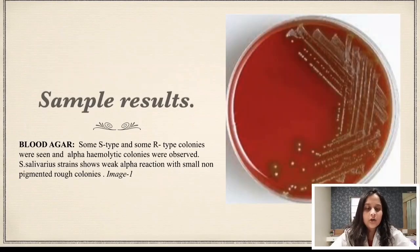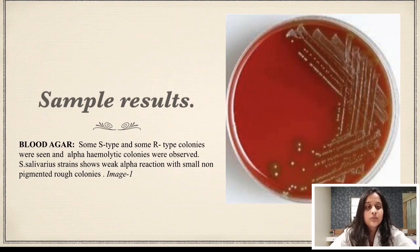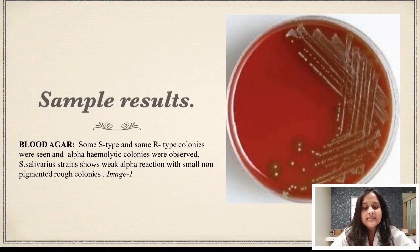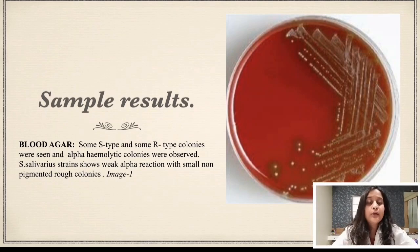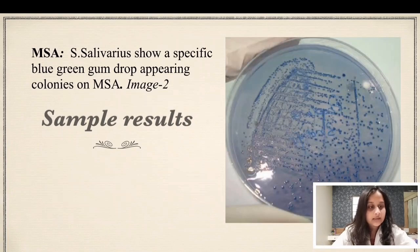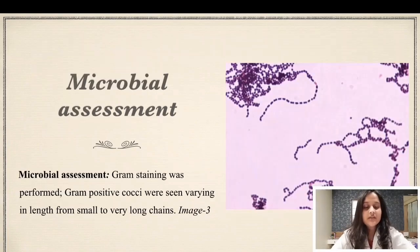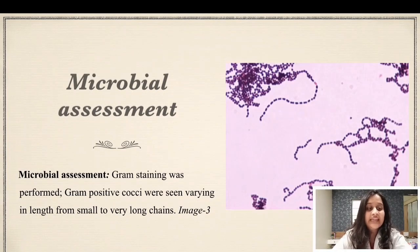Results were then obtained. It showed some R-type and some S-type colonies. The R-type were rough colonies and the S-type were smooth colonies with alpha hemolytic colonies. S. salivarius showed weak alpha reactions with small non-pigmented rough colonies. While on MSA, blue gumdrop colonies were seen as shown in the figure. When smears were prepared and Gram staining was done, Gram-positive cocci of varying chain length were seen, ranging from very small to very long chains.